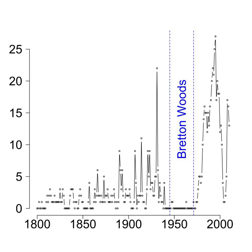Informally, a national recession is a period of declining economic output. In a 1974 New York Times article, Julius Shiskin suggested several rules of thumb to identify a recession, which included two successive quarterly declines in gross domestic product, a measure of the nation's output. This two-quarter metric is now a commonly held definition of a recession. In the United States, the National Bureau of Economic Research is regarded as the authority which identifies a recession, taking into account several measures in addition to GDP growth before making an assessment. In many developed nations, the two-quarter rule is also used for identifying a recession.